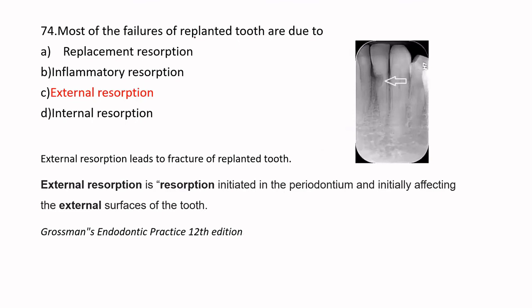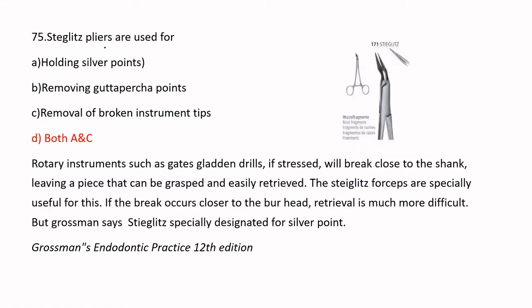Most failures of replanted teeth are due to external resorption. The question refers to replanted teeth generally, not just avulsed teeth, which includes auto-transplantation. After replantation, resorption is initiated in the periodontium, initially affecting the external surface of the tooth and leading to fracture of the replanted tooth. Most failures are due to external resorption from periodontal injury.